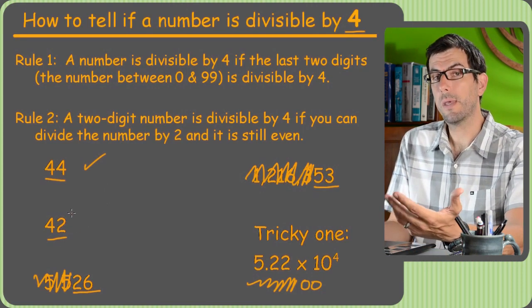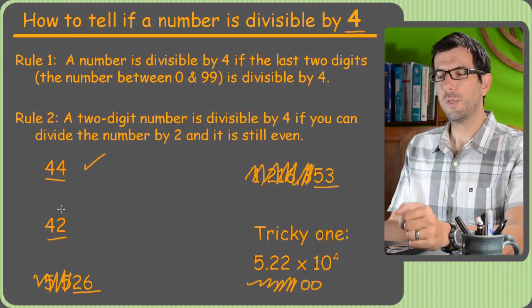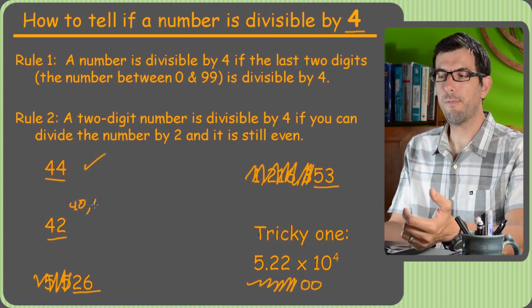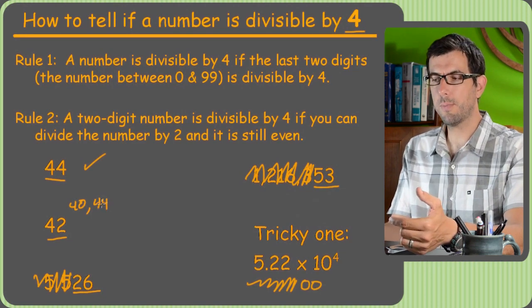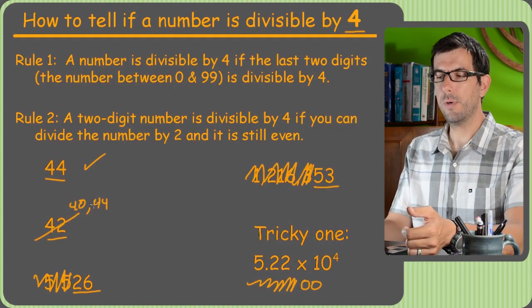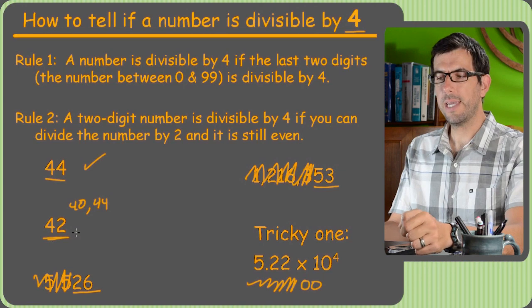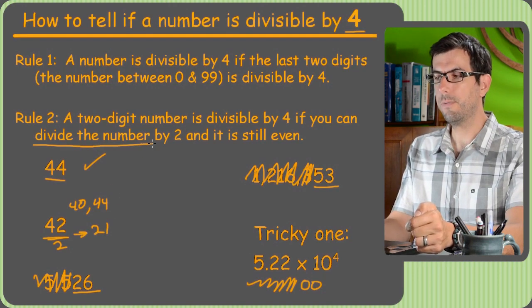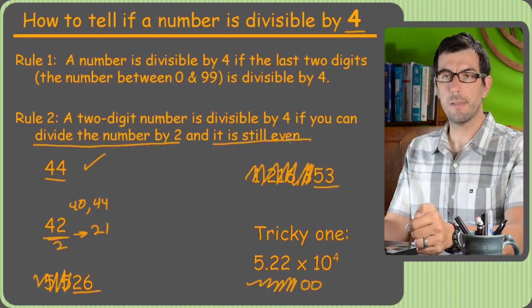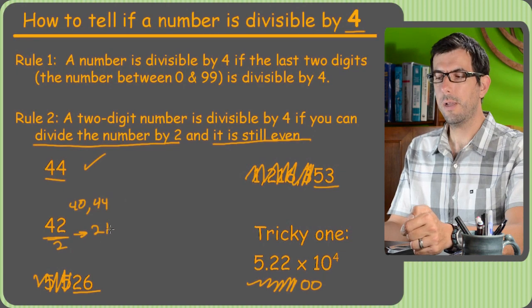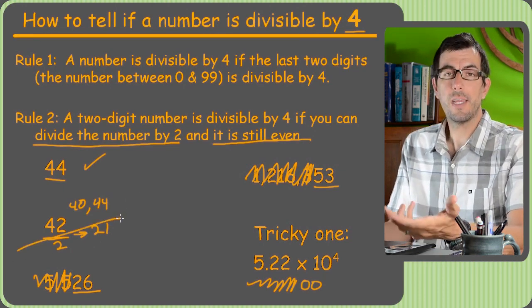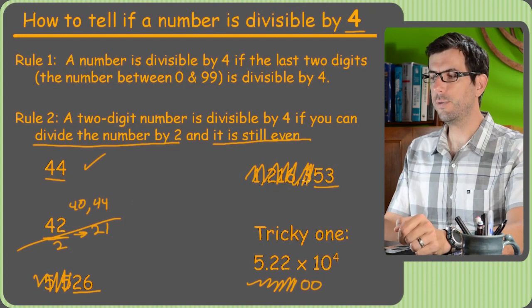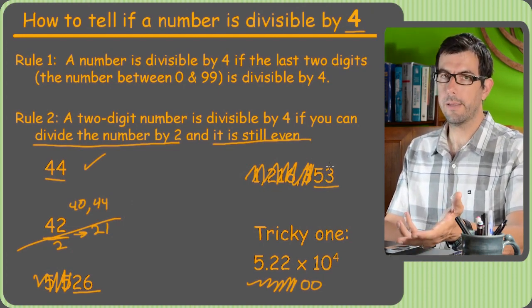42, you might be, even if you know your times tables, you might be like, huh, 4 times what? I can't think of anything. There's two ways to do it. One is you realize that 4 times 10 is 40. And if 40 is a multiple of 4, that means that the next multiple of 4 would be 44. And obviously, 42 is not going to fall in between there as a multiple. So this one is not divisible by 4. The other way to do it is you can take the number, those last two digits, and divide it by 2. So 42 divided by 2 would give you 21. And what you do is, after you divide it by 2, you ask yourself, is it still even? 21, not even. 21 is an odd number. Therefore, another way of stating this rule would be that if you divide the number by 2, it should still be divisible by 2 again. You should be able to divide the number by 2 twice.